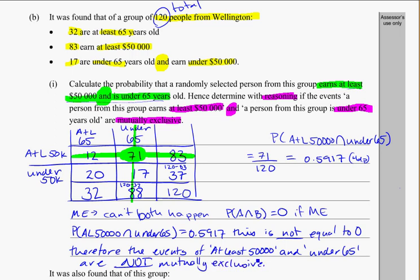So to test mutually exclusive events, again, you just have to see if they can happen together, and in this case, clearly, we've got 71 people who are both under 65 and earning at least $50,000.